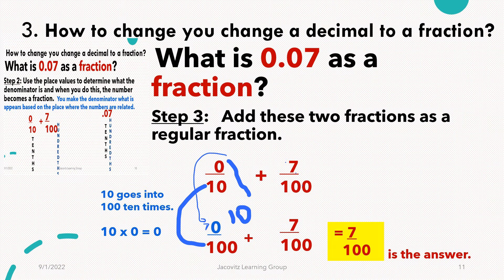What happens is ten goes into a hundred ten times. Ten times zero is zero. You're getting a common denominator here, which is going to be a hundred. So then you have seven over a hundred here. When you get ready to add this up, it's zero plus seven over a hundred, which is seven over a hundred. You cannot reduce any further. There's your answer.